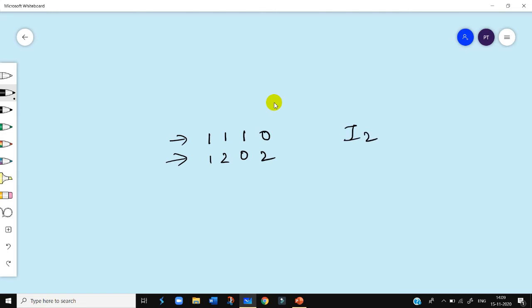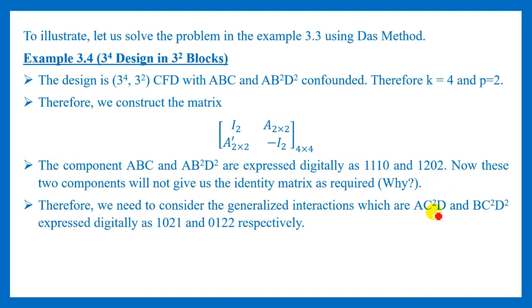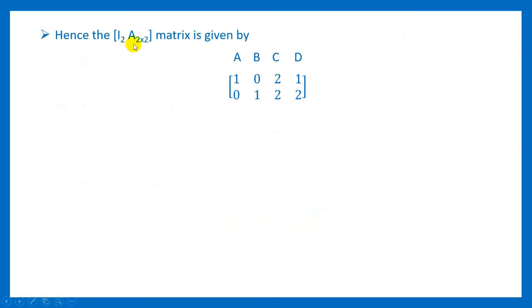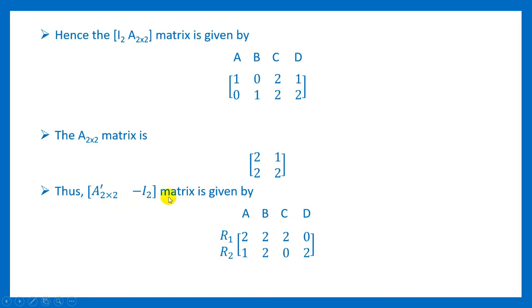So we need to take the help of the generalized confounded effects, which are AC²D and BC²D. Expressing these digitally gives 1 0 2 1 and 0 1 2 2, and written one over another the first two columns give us the required identity matrix of order 2. Hence the I₂|A matrix has the first two columns forming the identity matrix and the remaining two columns of C and D composing the A matrix, which is 2 2 / 1 2. The A' matrix is 2 1 / 2 2 and -I₂ is a diagonal matrix with all diagonal elements 2. So A'|-I₂ gives the independent treatment combinations of the principal block: A²B²C² and AB²D².